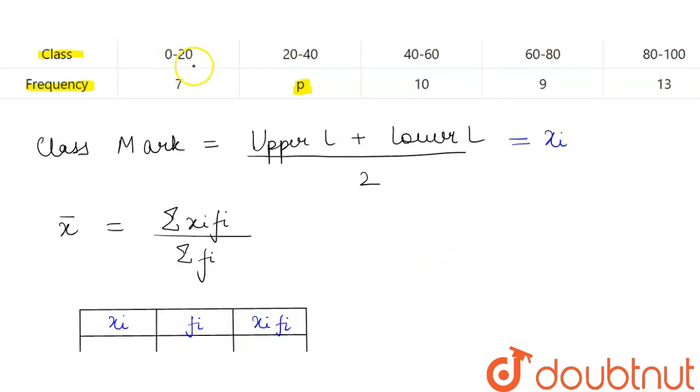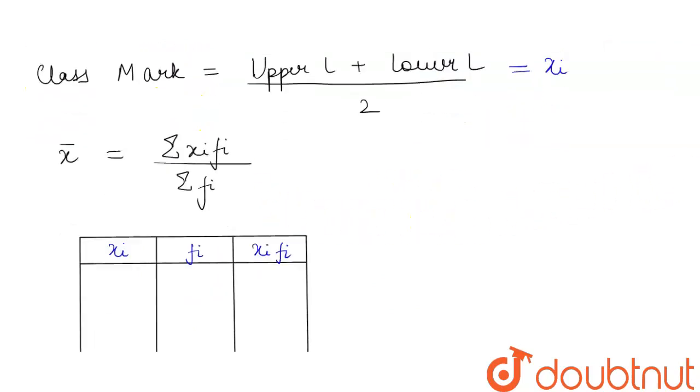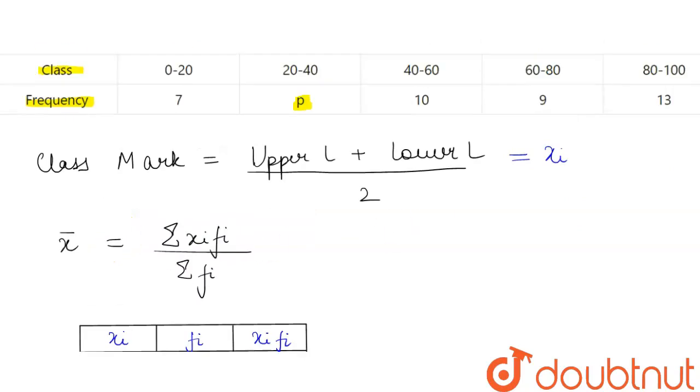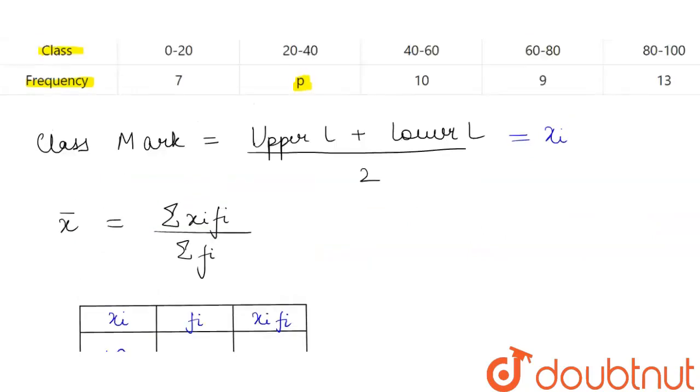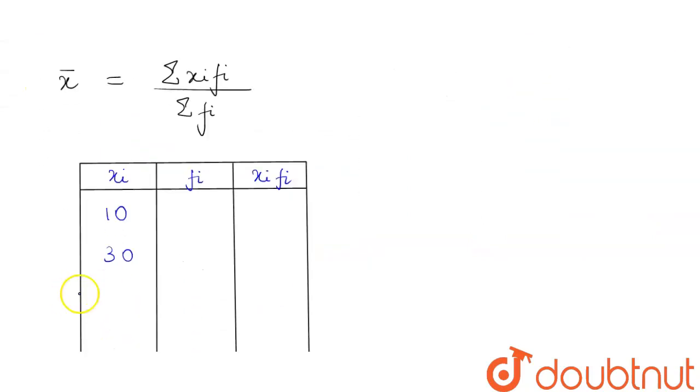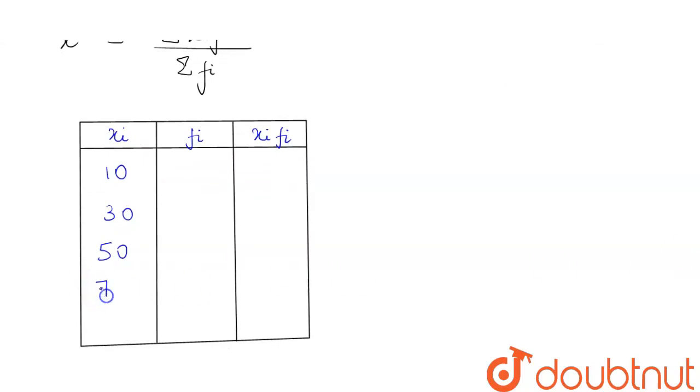If we find the class mark of the first interval, this will be equal to 20 plus 0 divided by 2, that is 10. Second, it will be 20 plus 40 divided by 2, that is 30. Then we will have 40 plus 60 divided by 2, that is 50. 60 plus 80 divided by 2 is 70, and 80 plus 100 divided by 2 is 90.